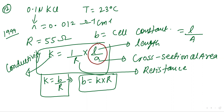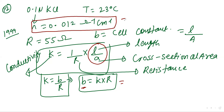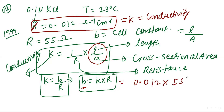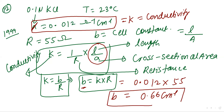Now put in the values. You have to find length upon area — the cell constant value. B equals K into R. K value, which is conductivity, is 0.012 ohm⁻¹·cm⁻¹. Into R, which is 55. Calculated, it is 0.66 cm⁻¹. So the cell constant value is 0.66 cm⁻¹.